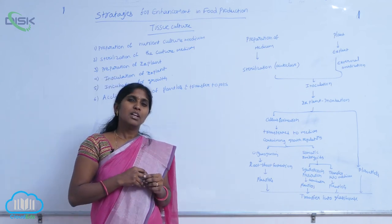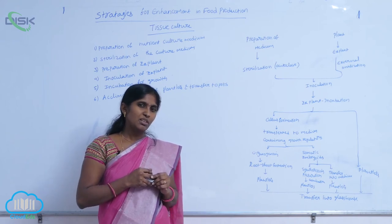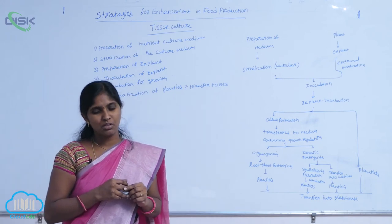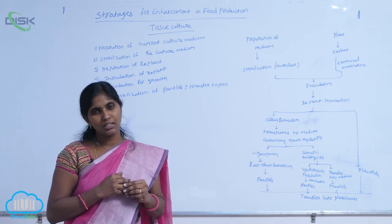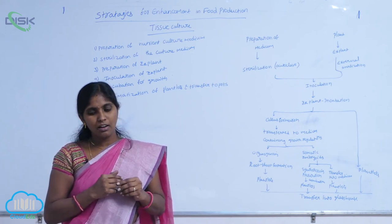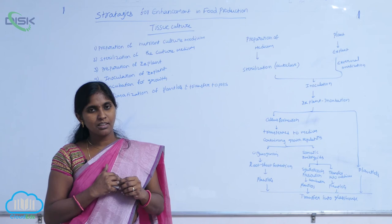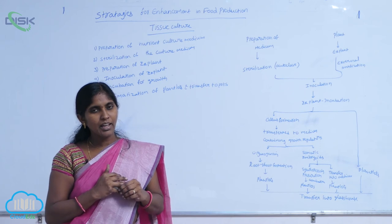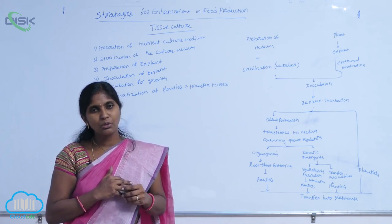For organogenesis and growth promotion, there is a supplement of plant growth hormones. The plant growth hormones supplemented into the nutrient medium are auxins and cytokinins. Auxins include indole acetic acid (IAA), naphthalene acetic acid (NAA), and 2,4-dichlorophenoxyacetic acid (2,4-D). Cytokinins include kinetin and benzyl adenine. These phytohormones are supplemented to the nutrition medium to promote organogenesis from callus.